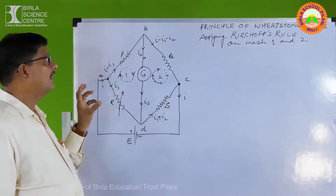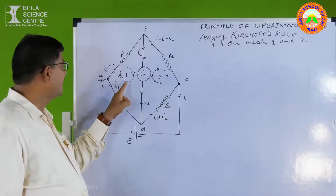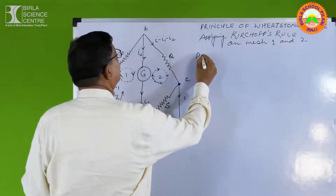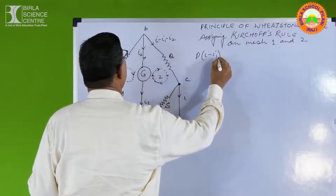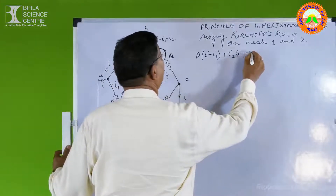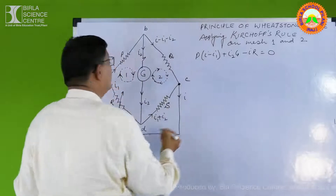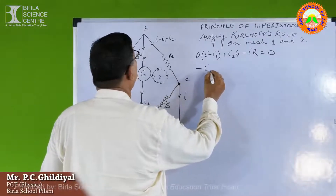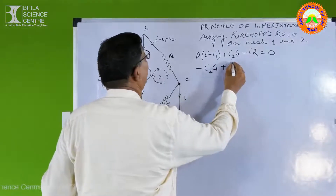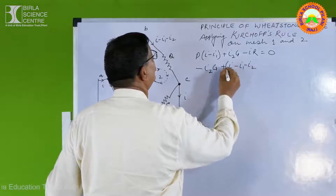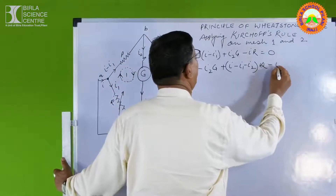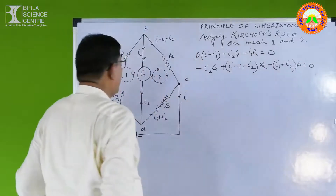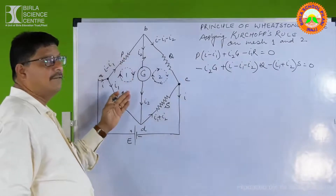To show the principle of the Wheatstone Bridge, we apply Kirchhoff's rule in Mesh 1 and Mesh 2. In Mesh 1, which is clockwise, the equation becomes: P·I₁ + (I₁ + I₂g)·r − I₁·r = 0. In Mesh 2, on applying the mesh rule, the equation becomes: −I₂g + (I − I₁ − I₂)·Q − (I₁ + I₂)·S = 0. In the balancing state, the current through the galvanometer is zero.